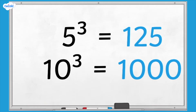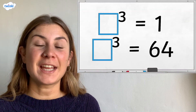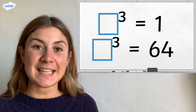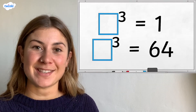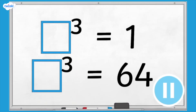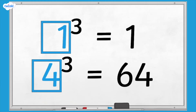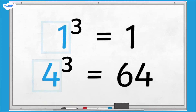Well done if you got the correct answers. For your final challenge, can you fill in the missing numbers in these number statements? So 1 times 1 equals 1, and then multiplied by 1 again makes 1 still. And 4 cubed is 4 times 4, which equals 16, and then multiplied by 4 again to make 64.